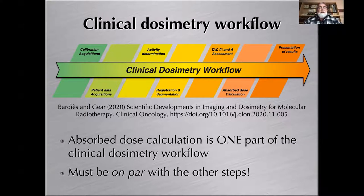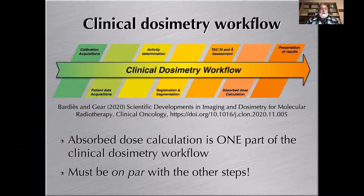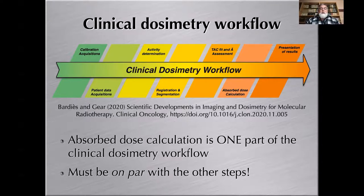The first step is calibration acquisition before patient imaging, which grants the possibility of activity assessment at the patient level. Then there is patient data acquisition, followed by activity determination — meaning reconstruction, but also implementing various corrections to go from counts detected in the image to activity: scatter correction, attenuation correction, partial volume effect correction, and so on. Then comes registration and segmentation of images acquired at different time points after administration of the radioactive drug.